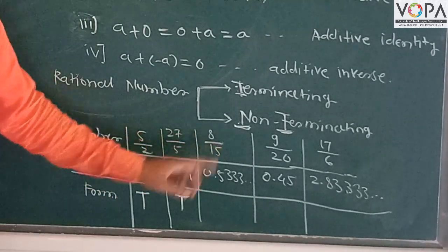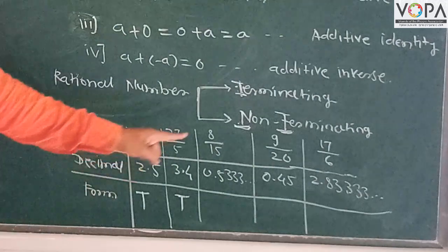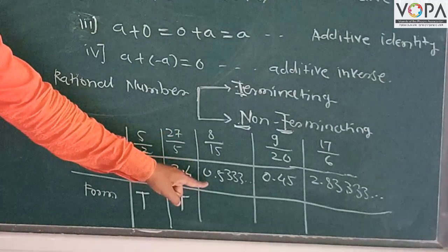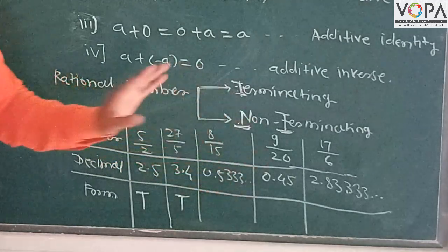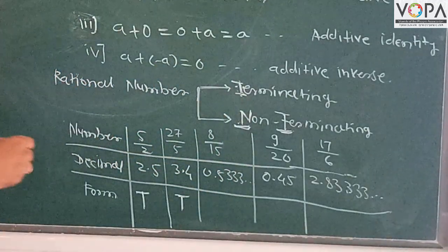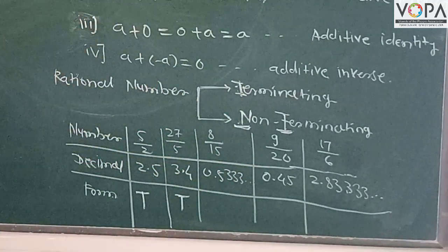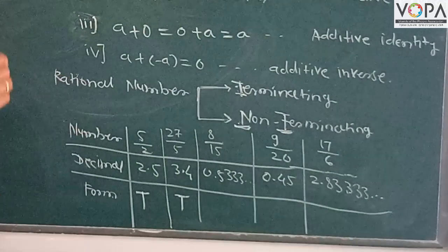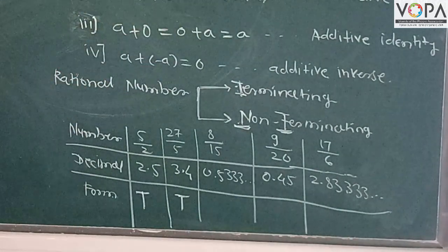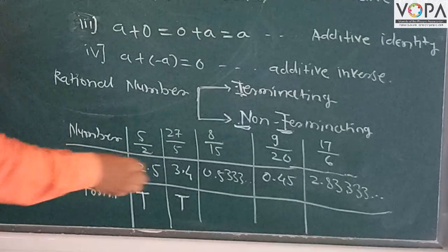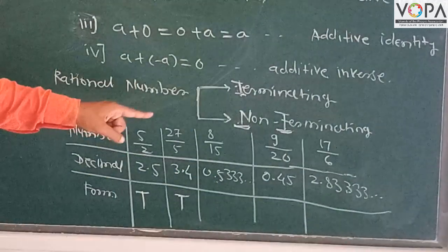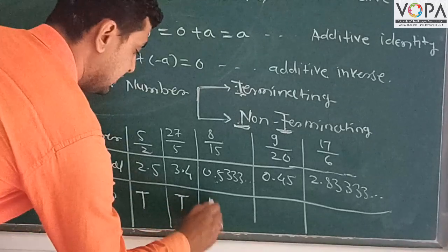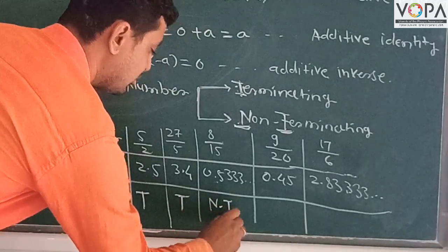Third example is 8/15. 8/15 in decimal form is 0.5333... It is a non-terminating term and we write NT.